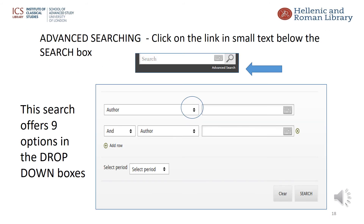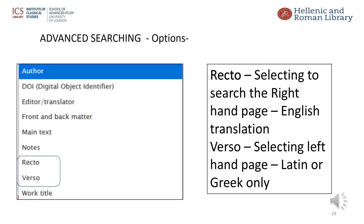Now I'll move on to the advanced search. The link for this is in a very small size font under the main search box on the right hand side, so I've added an arrow to show its position. From here, a set of boxes appear which allows more precise searching. Note there is an option to select a time period. The screen presents the user with drop-down boxes to fill in, and this slide shows the nine options, some more useful than others.